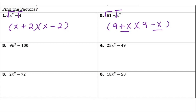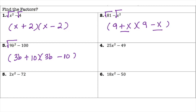For number 3 we have a coefficient in front of b squared, but the process is the same. 9 is a perfect square, b squared is a perfect square, 100 is a perfect square, and they're subtracting, so we can use difference of squares. Set up parentheses with plus and minus; the square root of 9b squared is 3b, and the square root of 100 is 10, giving (3b + 10)(3b - 10).